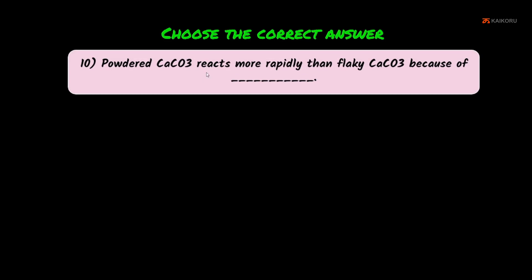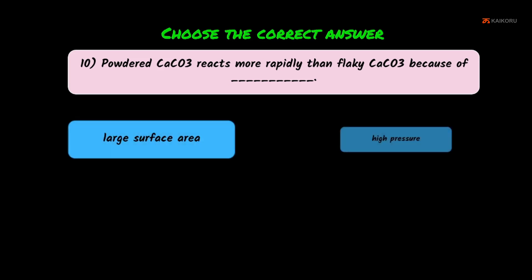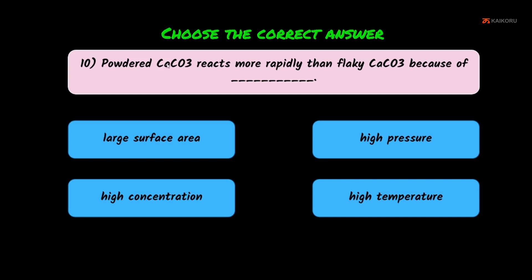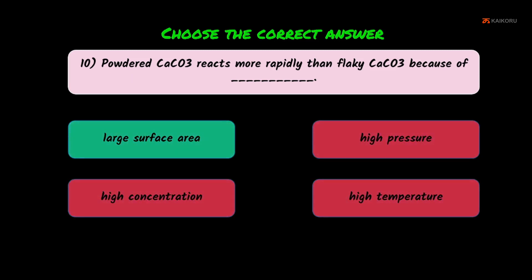Tenth question: powdered CaCO₃ reacts more rapidly than flaky CaCO₃ because of what? Options: large surface area, high pressure, high concentration, high temperature. When in powder form, the surface area increases, making the reaction easier. The answer is large surface area.